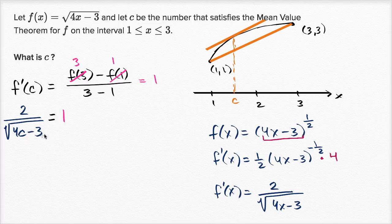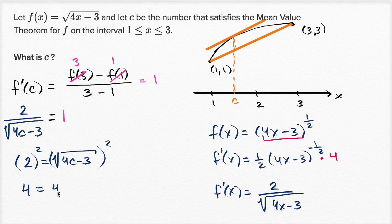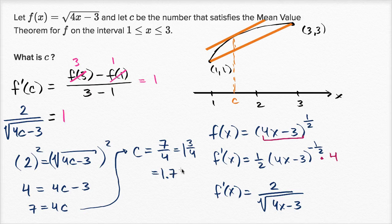Let's solve this. We can multiply both sides by the square root of 4c minus 3, which gives us 2 equals the square root of 4c minus 3. Now to get rid of the radical, we square both sides: 4 equals 4c minus 3. Add 3 to both sides: 7 equals 4c. Divide both sides by 4: c equals seven fourths, which equals one and three fourths, or 1.75.